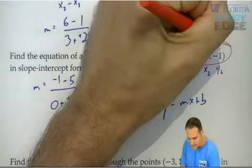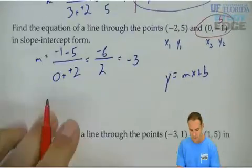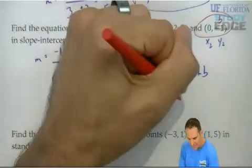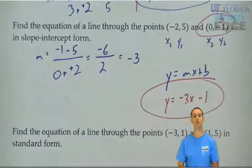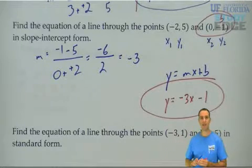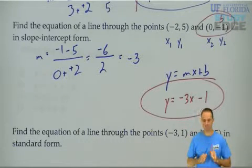x is 0, y is negative 1, that is your b. x is 0, and we have our slope m, and we can write y equals mx plus b, plus the negative 1 would just be minus 1. And there's your answer in this case, because they want it in slope intercept form.